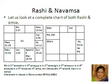Their corresponding placements in the Navamsha chart: Moon has gone to the second Amsa — counting from Aries, it comes to Taurus. Ketu has gone to the fifth Amsa — counting from Libra, it goes to Aquarius. Jupiter's starting point is Cancer, second Amsa, so it goes to Leo. Lagna counts from Aries, fifth Amsa, so it comes to Leo.